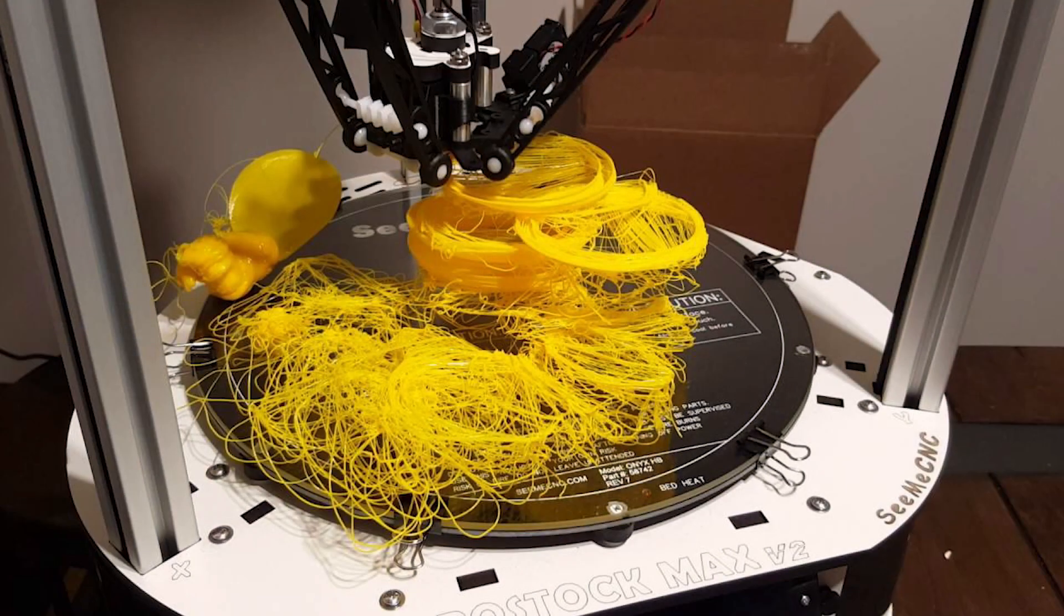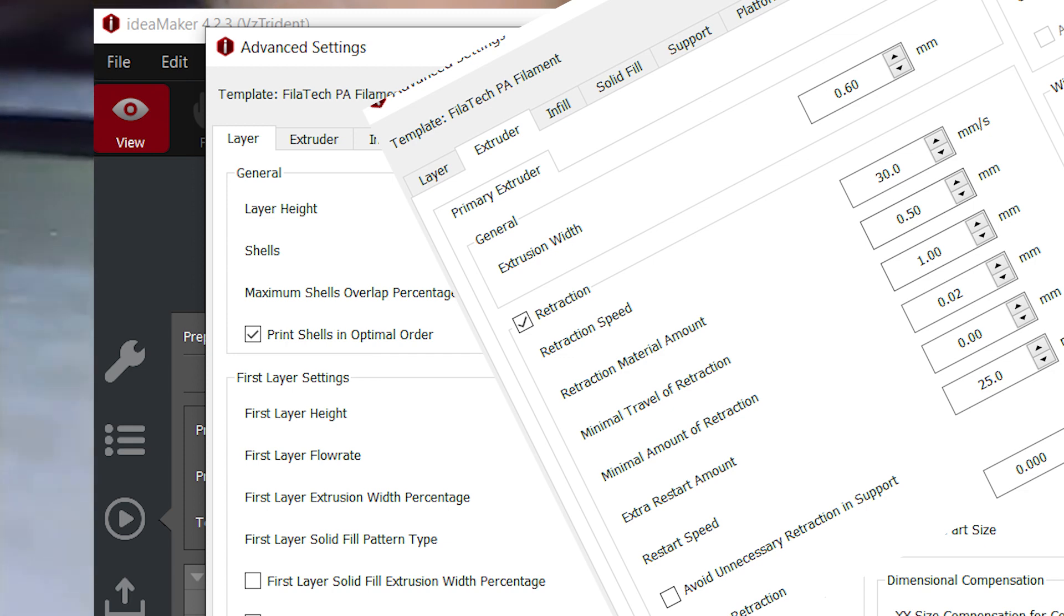Getting a successful first layer plays a crucial role in whether or not your print will succeed. There's many factors that play a role such as Z offset, layer height, extrusion width, and so on.